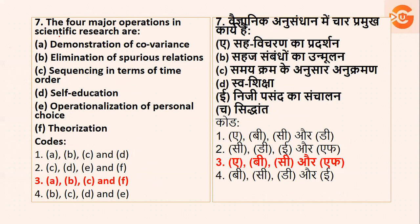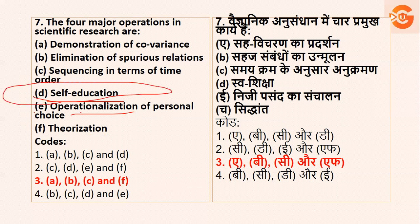Major operations in scientific research — scientific research mein operations kaun se hai? The options include demonstration, elimination, sequencing, self-education, operationalization of personal choice, and theorization. Aapko pata hai self-education ya personal choice toh ho nahi sakta. So jahan pe D ya E hai, wo aapke options nahi hain. The right option is option number three, that is A, B, C, and F. This is how you make your answers easier and solve your paper quicker.